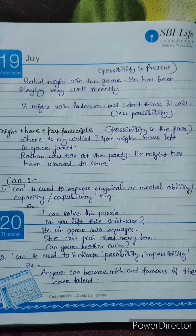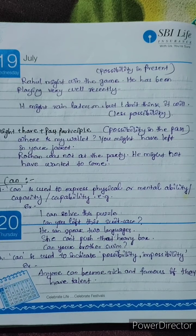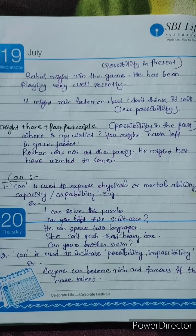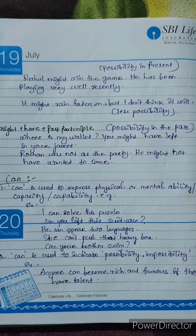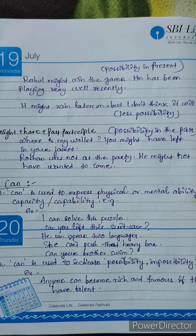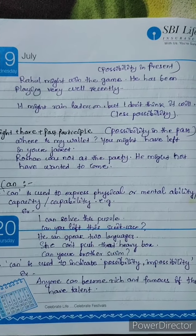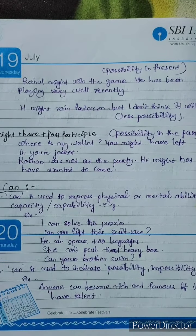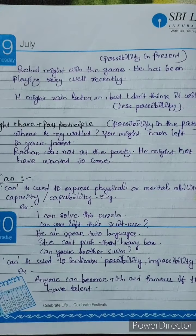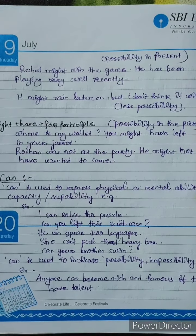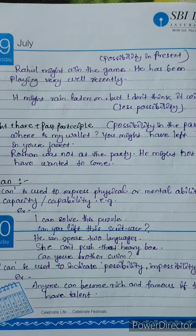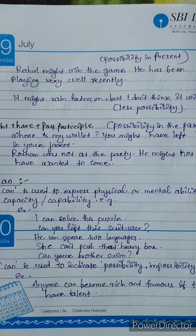Can is the modal which is used to express physical or mental ability, capacity, or capability. We basically use the modal can to indicate mental ability, physical ability, or capacity. For example: 'I can solve the puzzles' — here mental ability means by using your brain you can solve the puzzles. 'Can you lift this suitcase?' — here we are discussing physical ability or strength. 'He can speak two languages' — this is also intellectual or mental ability.